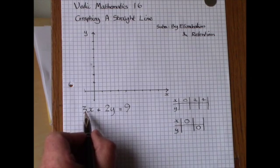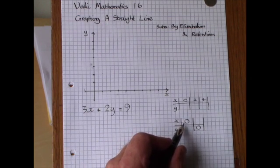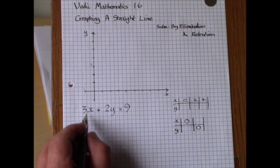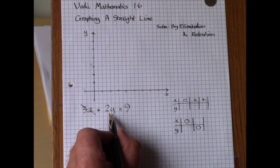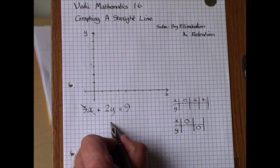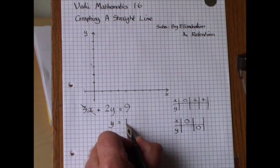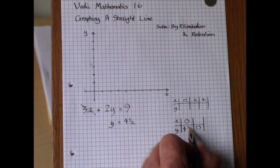And the way we do that is this, that for x is 0 we can eliminate this 3x straight away and be left with the equation 2y equals 9 which we solve. y is 4 and a half. So we put 4 and a half there.